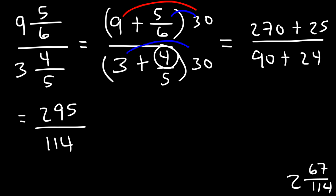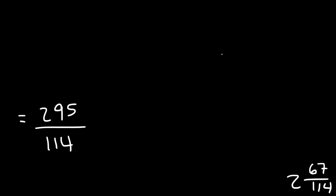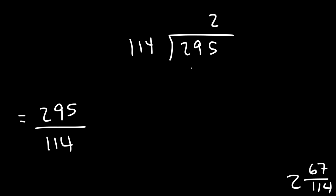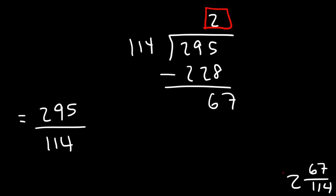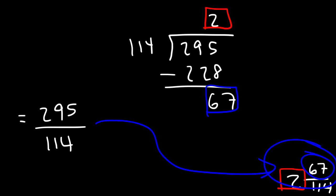270 plus 25 is 295, and 90 plus 24 is 114. Using long division: 114 goes into 295 two times, 114 times 2 is 228, and 295 minus 228 is 67. So the final answer is 2 and 67 over 114. You can repeat the same procedure for the third example. Thanks for watching.